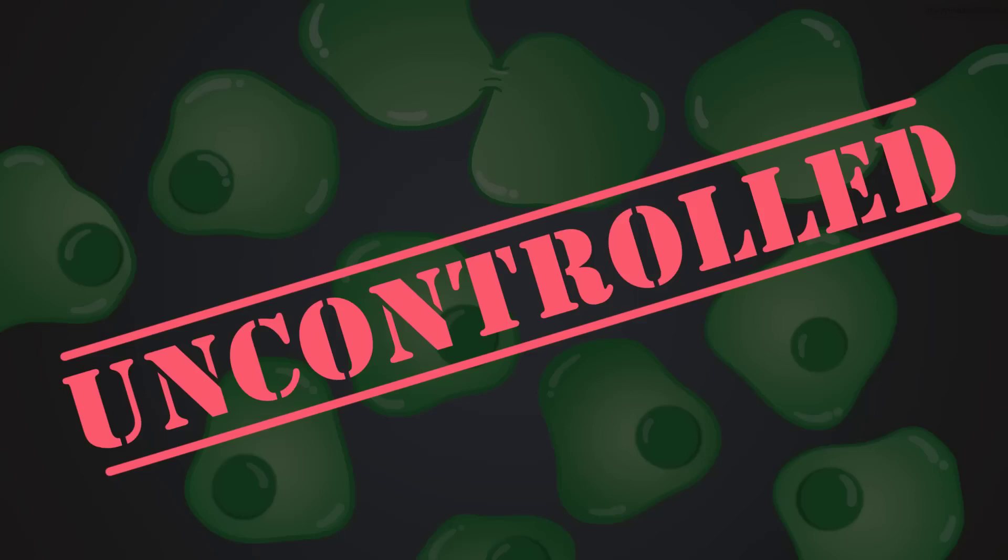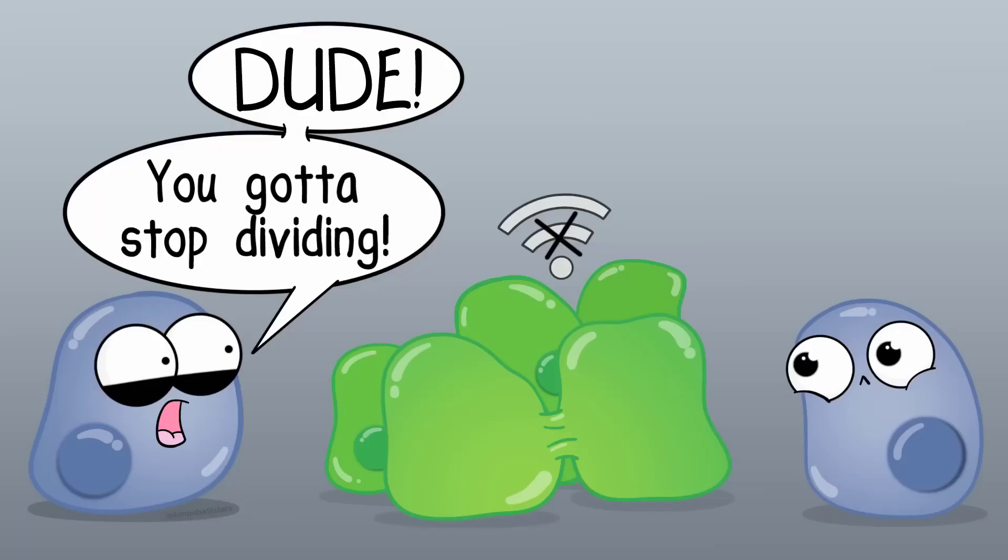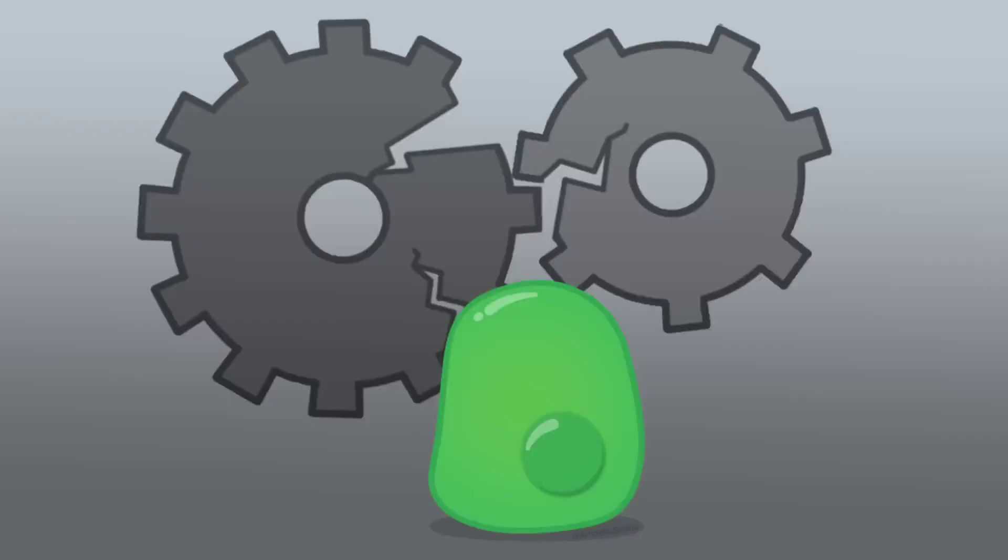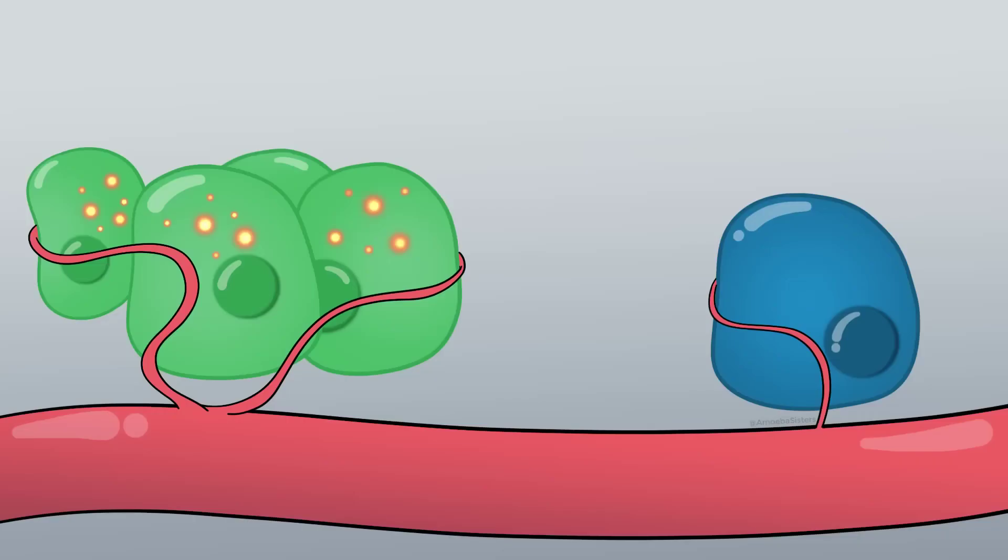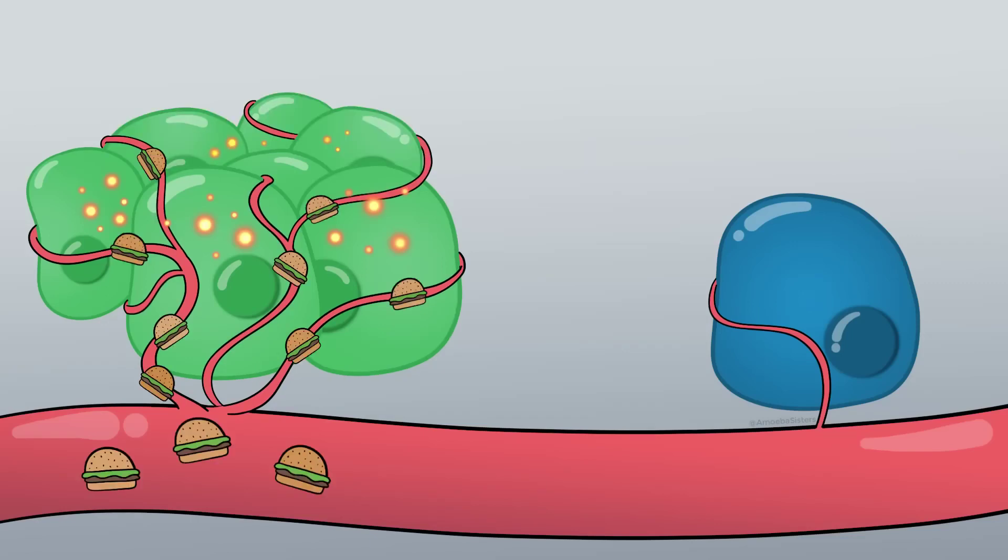Cancer cells can have other problems too. They might not be able to communicate with other healthy cells. They may not be able to carry out normal cell functions. They may not securely anchor themselves like other cells do which can make them more likely to travel somewhere else. Some cancer cells have the ability to secrete their own growth hormone that makes blood vessels divert over to those cancer cells and supply the cancer cell with nutrients which can take nutrients away from healthy cells.